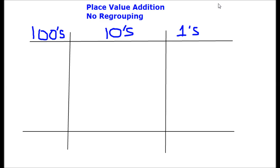For example, if I write the number 752, the 7 is not just a 7 — it's actually 7 hundreds. This is the hundreds position for this number. It's not 7 ones, because in this number the ones position is actually taken by the number 2. So what place value does is it gives you the math context of the number you're looking at.